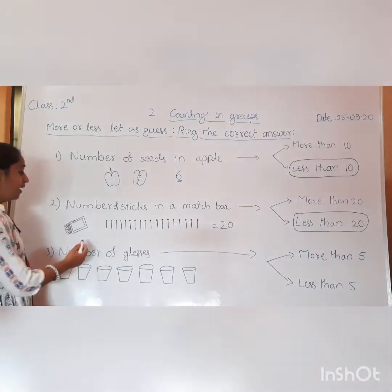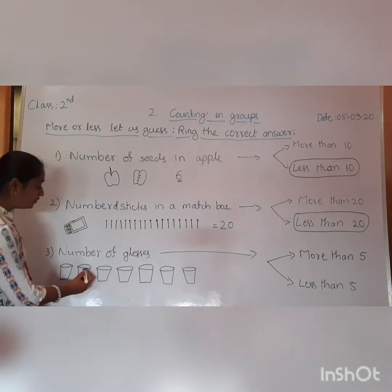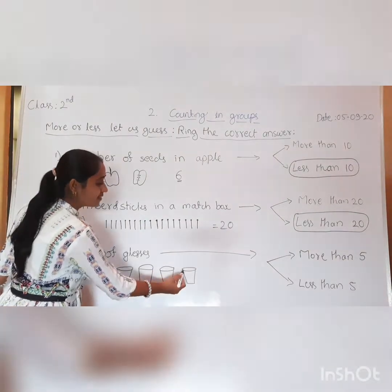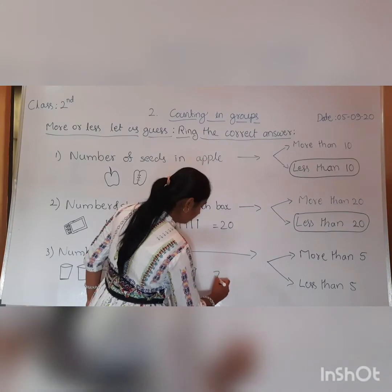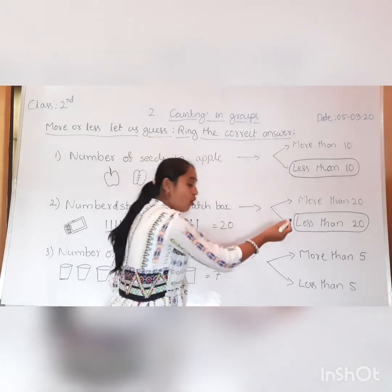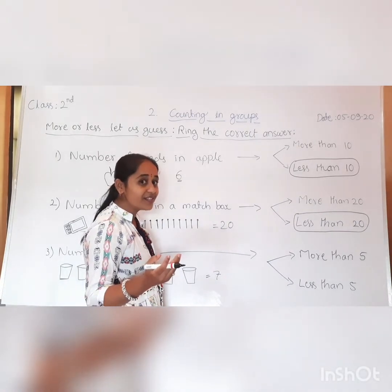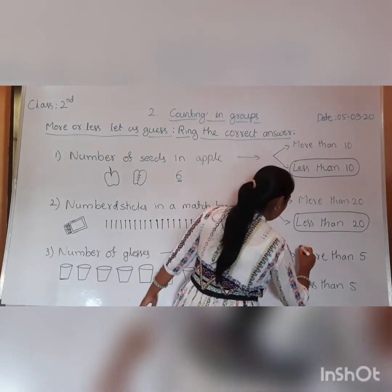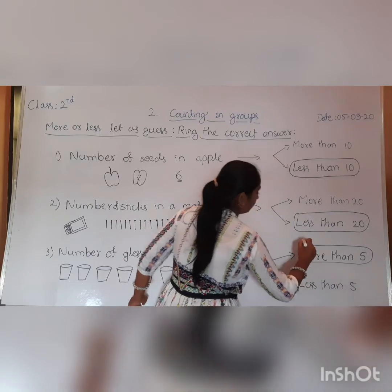Third question: number of glasses. Look here, how many glasses are there? One, two, three, four, five, six, seven. Here we have seven glasses. Is seven more than five or less than five? Seven is more than five. Bring the answer: more than five.